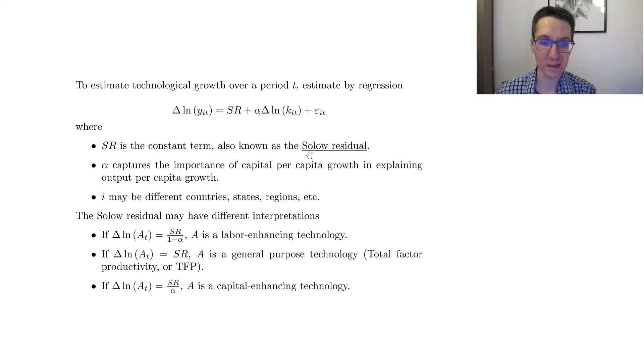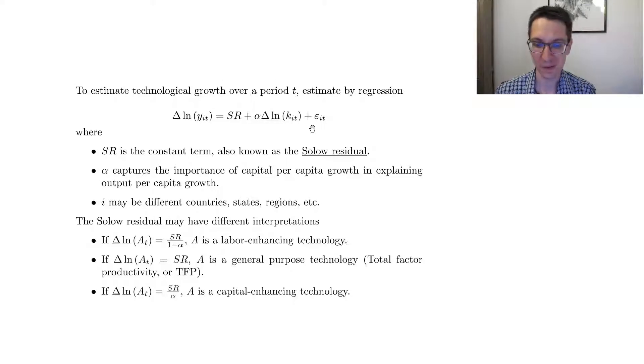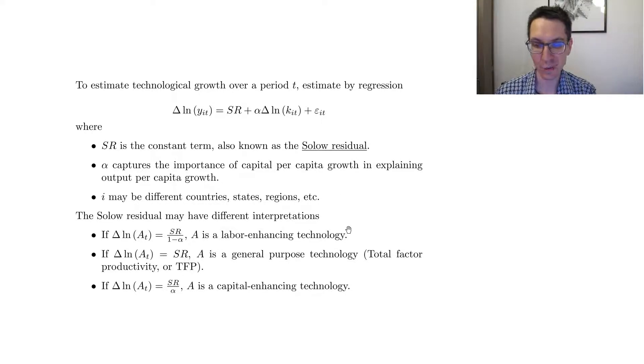So that's, in a sense, the constant term in the equation that we further have to interpret once we have done our estimation, plus alpha times delta ln k_it, plus some error term that's specific to each observation. So this, not to go into too much detail about linear regression, I will assume that you know them already.